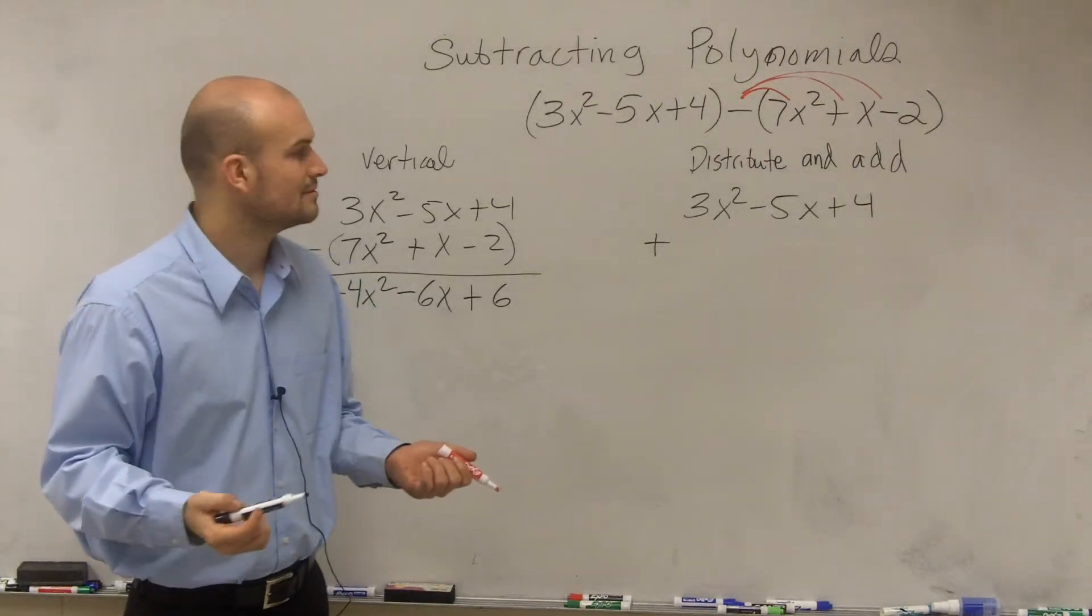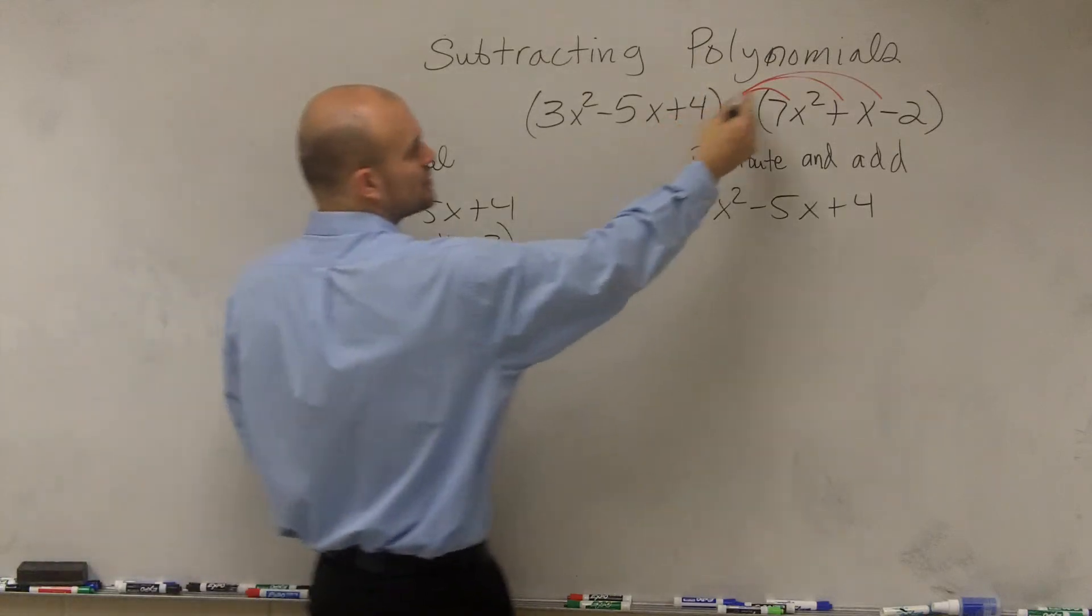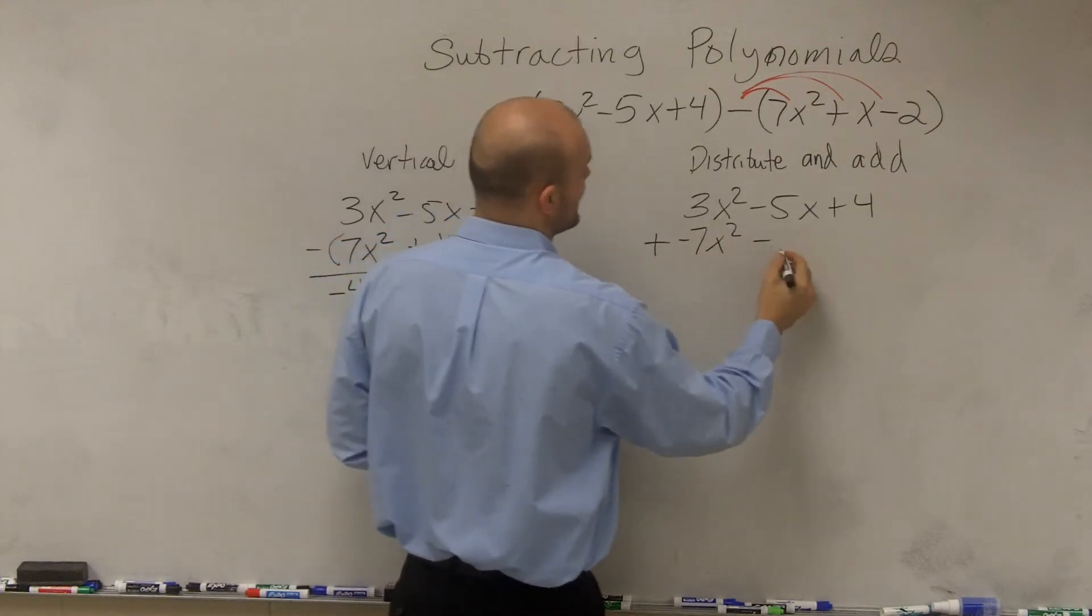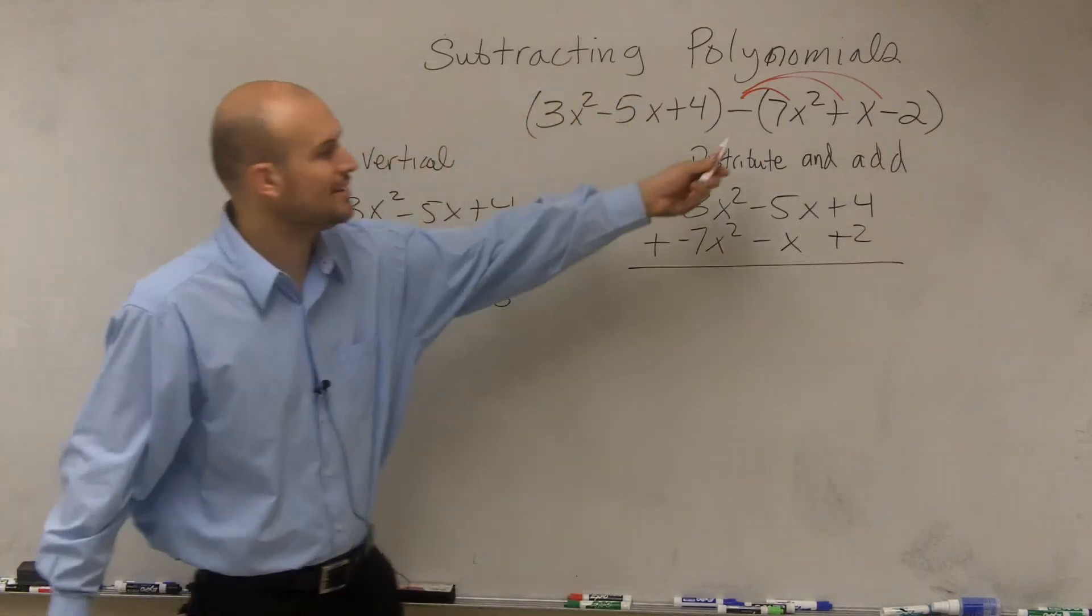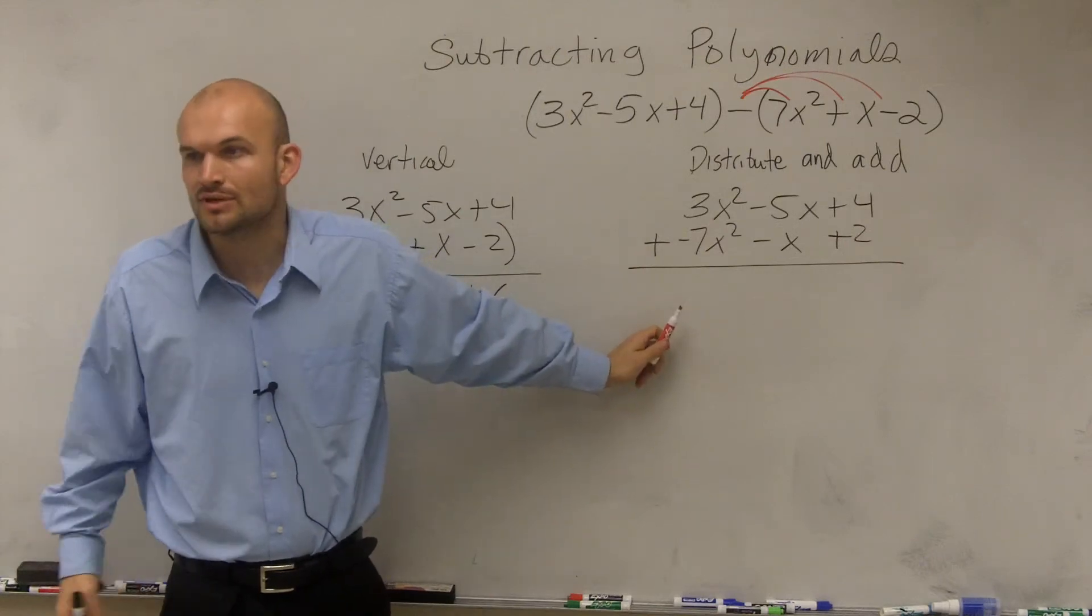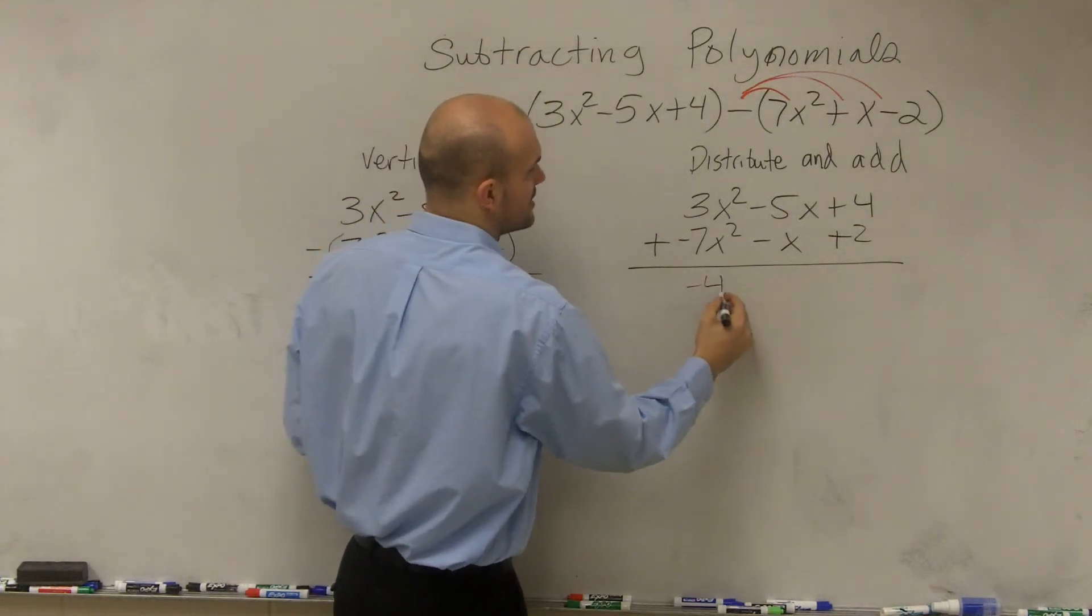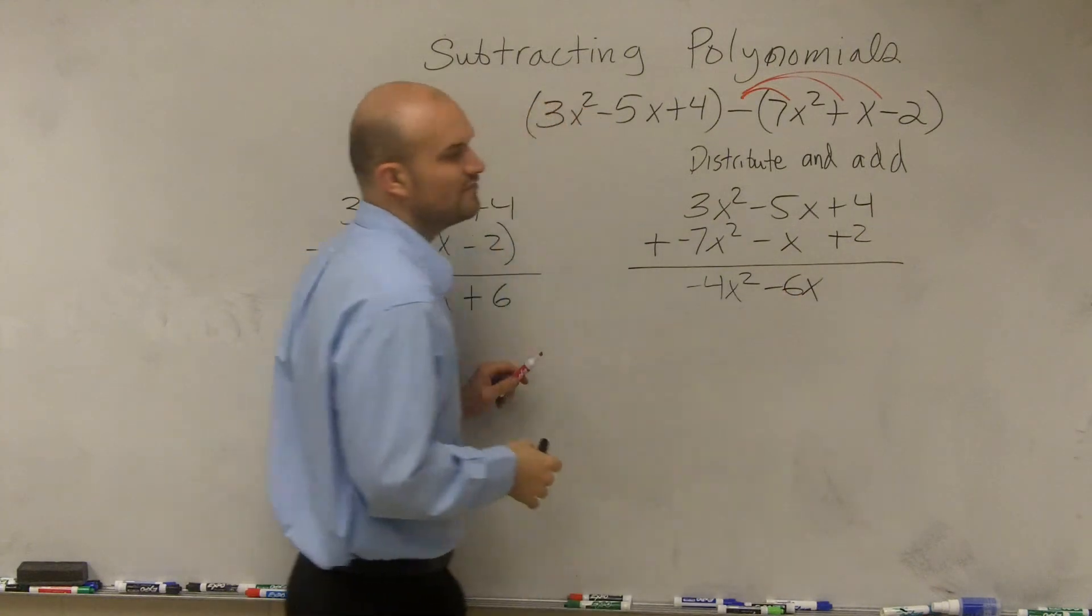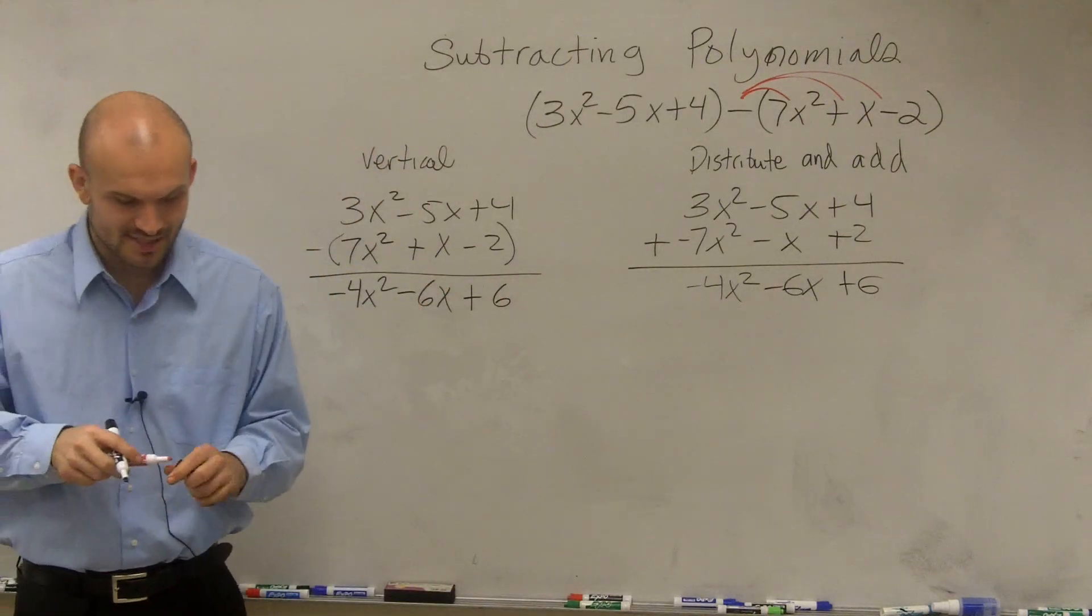So you distribute the negative sign. So now you have positive negative 7x squared minus x plus 2. So as you distribute, that means you change the sign of every single term. You can now rewrite it as an addition problem, which I think is easier for a lot of you. 3x squared plus negative 7x squared is negative 4x squared. Negative 5x plus a negative x, negative 6x. 4 plus 2, positive 6. Same answer? Same answer. Done and done.